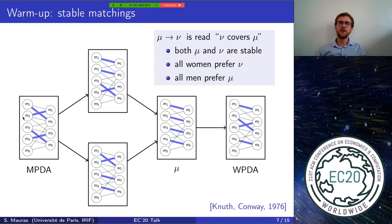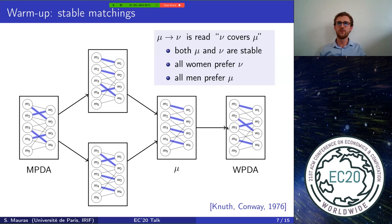If you draw all stable matchings of this instance, you see a nice structure called a lattice, proved by Knuth and Conway in 1976. An arrow from matching mu to matching nu means both are stable, all men prefer mu, and all women prefer nu — written as nu covers mu. Men-proposing DA returns the men-optimal matching (left), and women-proposing DA returns the women-optimal matching (right), because each procedure returns the respective side's optimal stable matching.